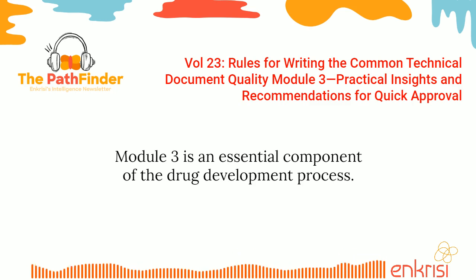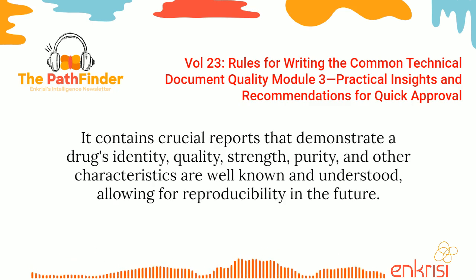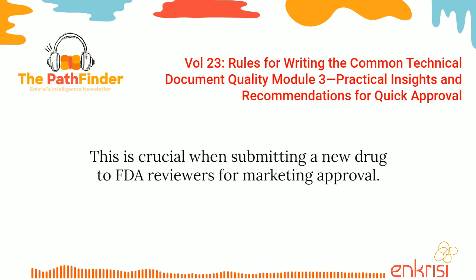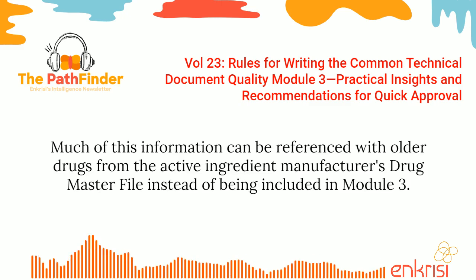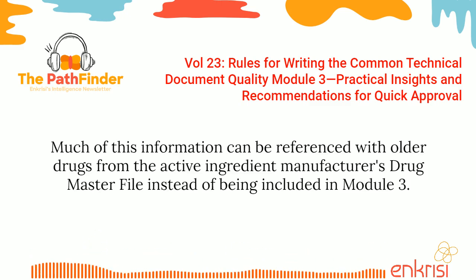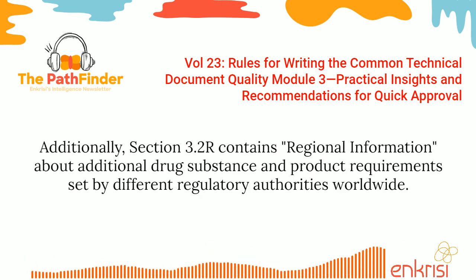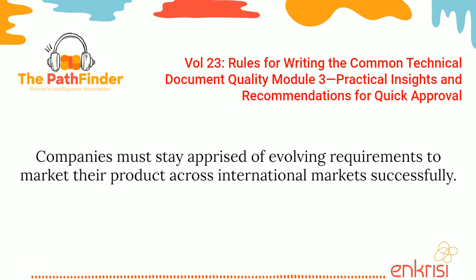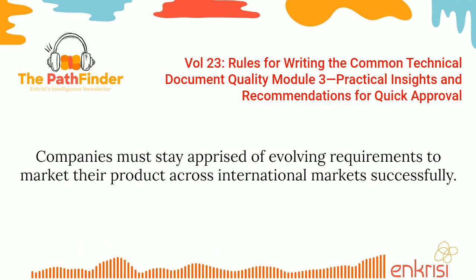Module 3 is an essential component of the drug development process. It contains crucial reports that demonstrate a drug's identity, quality, strength, purity, and other characteristics are well known and understood, allowing for reproducibility in the future. This is crucial when submitting a new drug to FDA reviewers for marketing approval. Much of this information can be referenced from the active ingredient manufacturer's drug master file instead of being included in Module 3. Additionally, Section 3.2R contains regional information about additional drug substance and product requirements set by different regulatory authorities worldwide, and companies must stay apprised of evolving requirements to market their product across international markets successfully.